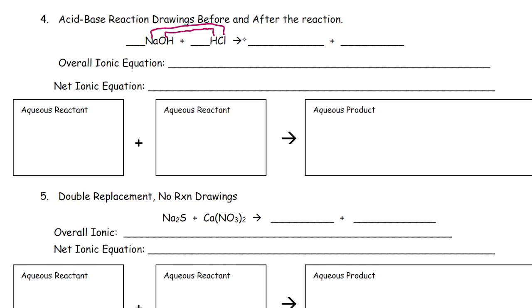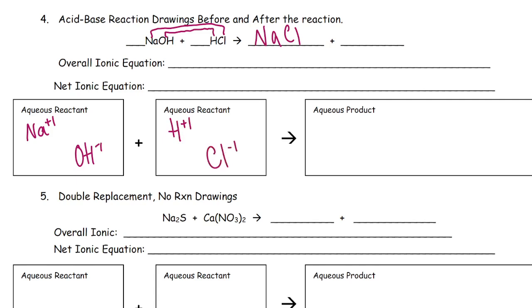If I have sodium bonded to chlorine, remember sodium has a plus one charge and chlorine has a negative one charge, so when they crisscross their charges, we would just write it as NaCl. The way to show our first reactant in the particle diagram is to draw sodium with a plus one charge and hydroxide with a negative one charge. My other aqueous reactant is going to be hydrogen with a plus one charge and chlorine with a minus one. All we're doing is separating these out into the actual ions that they would form.